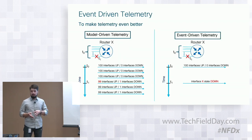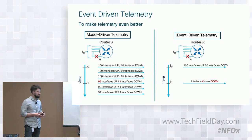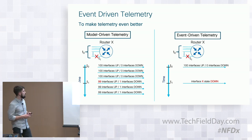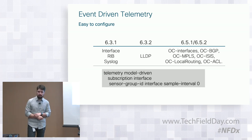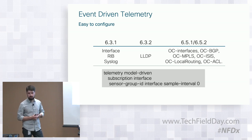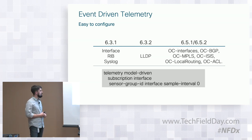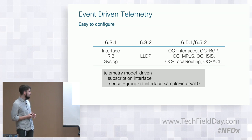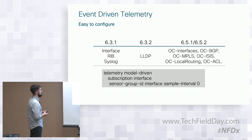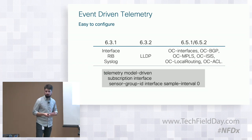When model-driven telemetry doesn't fit, we utilize event-driven telemetry and keep investing in it. Looking at various IOS XR releases: in 6.3.1 we introduced interface notifications, RIB, and Syslog; in 6.3.2 we added support for ODP; and with last year's summer releases we added a bunch of support for OpenConfig modules. Model-driven telemetry is very easy to configure — with just three lines, it's already enabled.